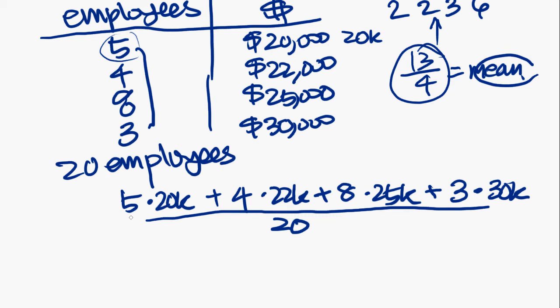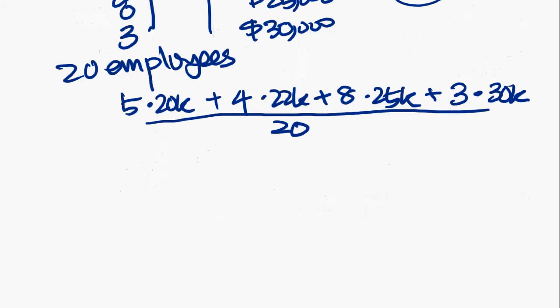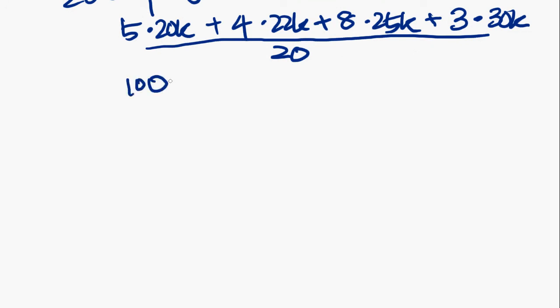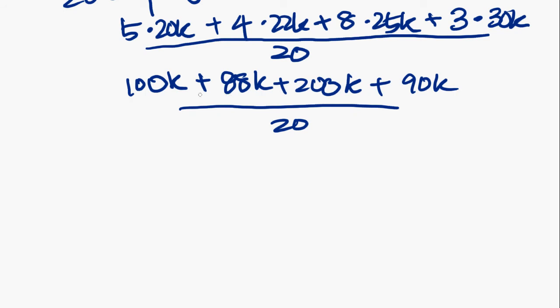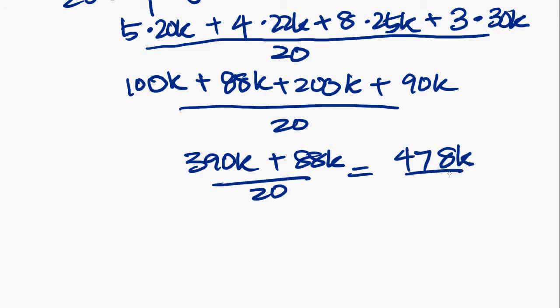So what you want to do here is just crunch these numbers and figure out the answer. So let's do that. 5 times 20 is 100. Plus 4 times 22. That's 88K. Plus 8 times 25. That's 200K. Plus 3 times 30K. 90K. Alright. And all over 20. Do not forget that. Let's add these up. 100, 200. That's 300. Plus 90. That's 390K. Plus 88K. Over 20. And that equals 478K over 20.